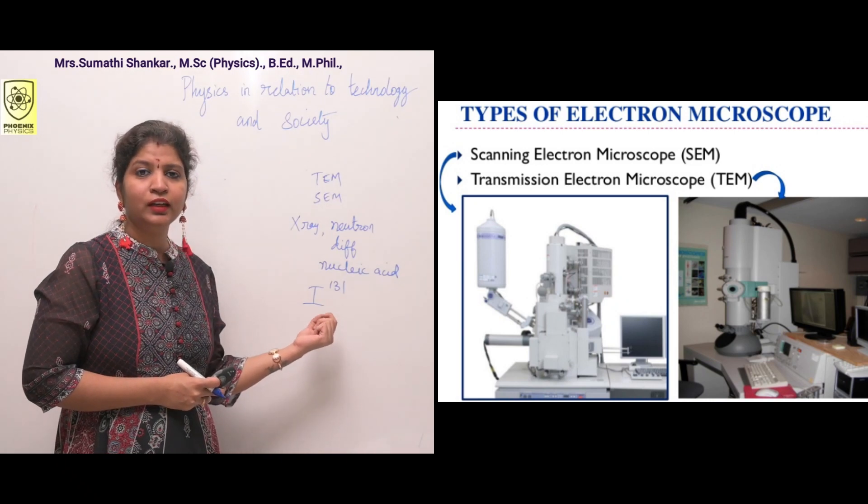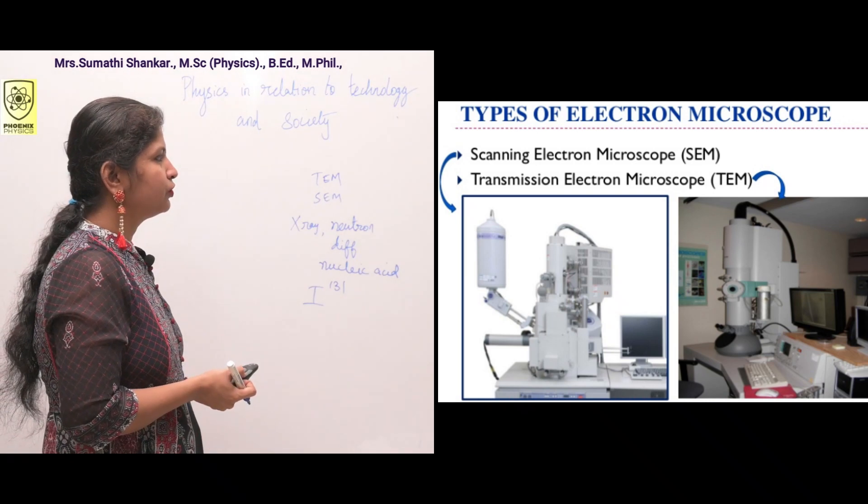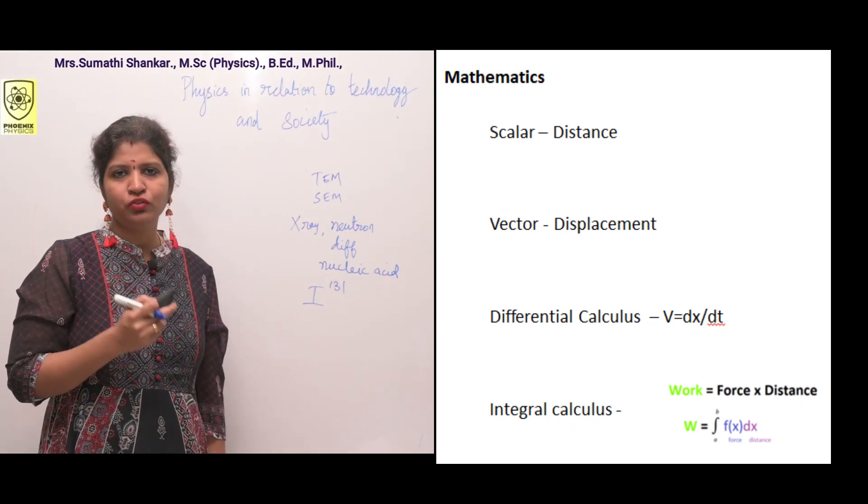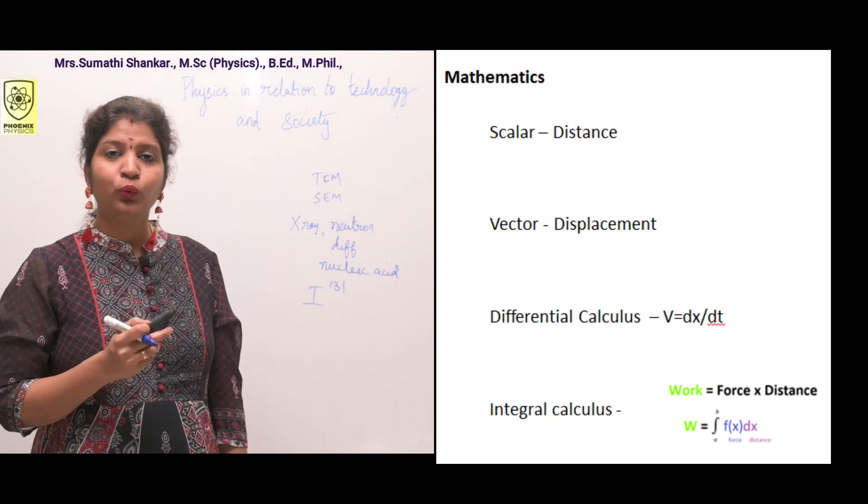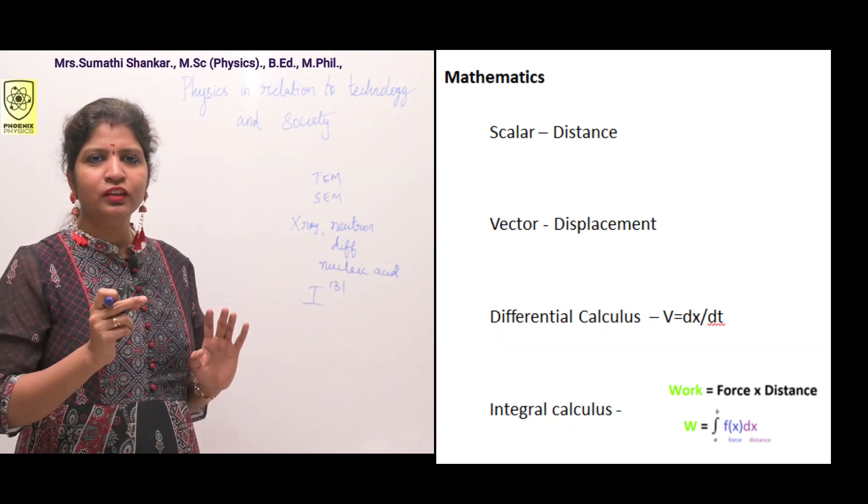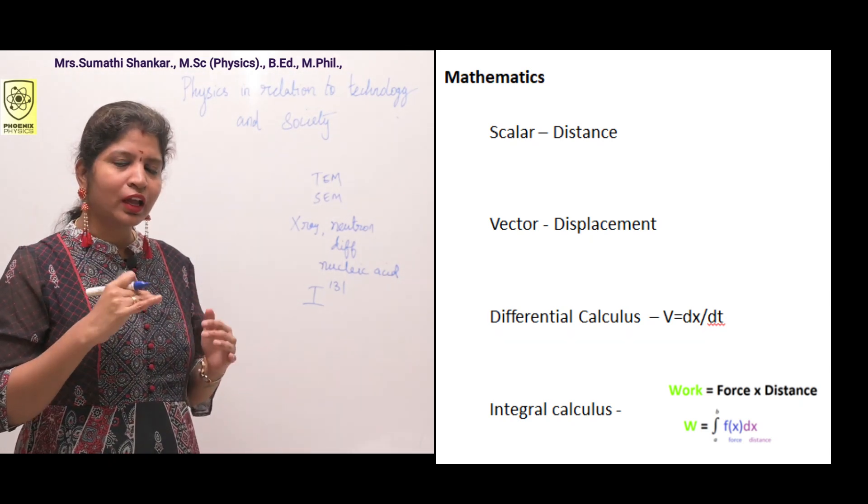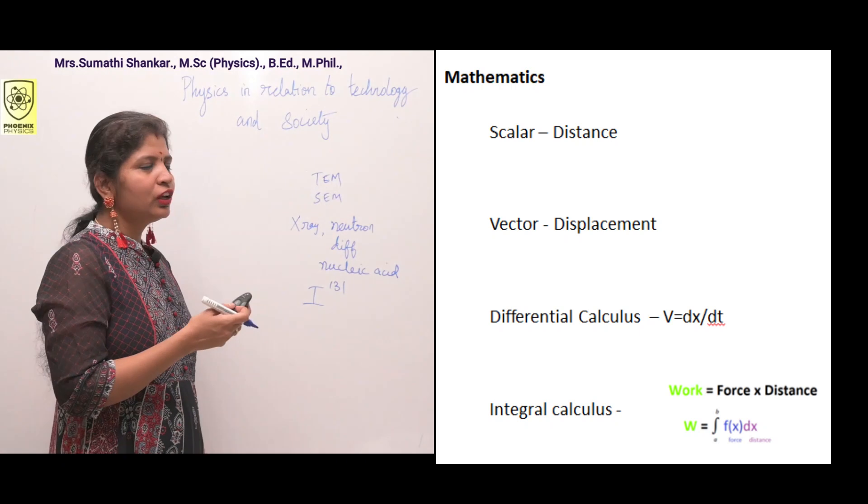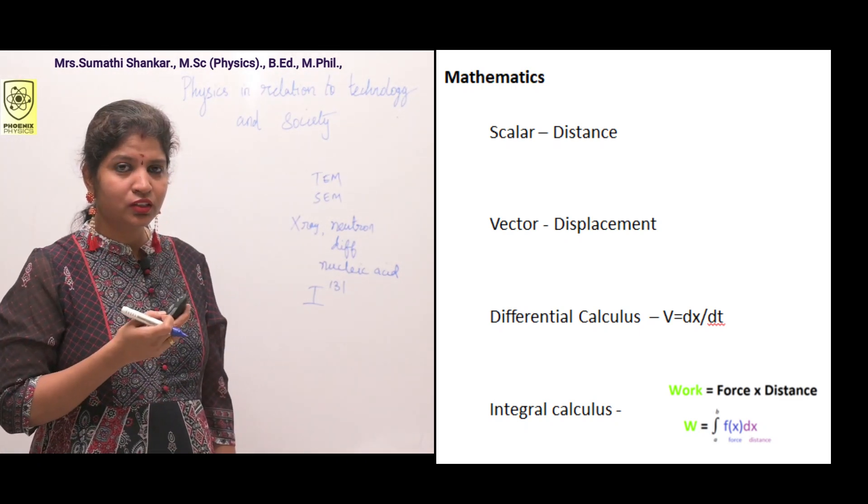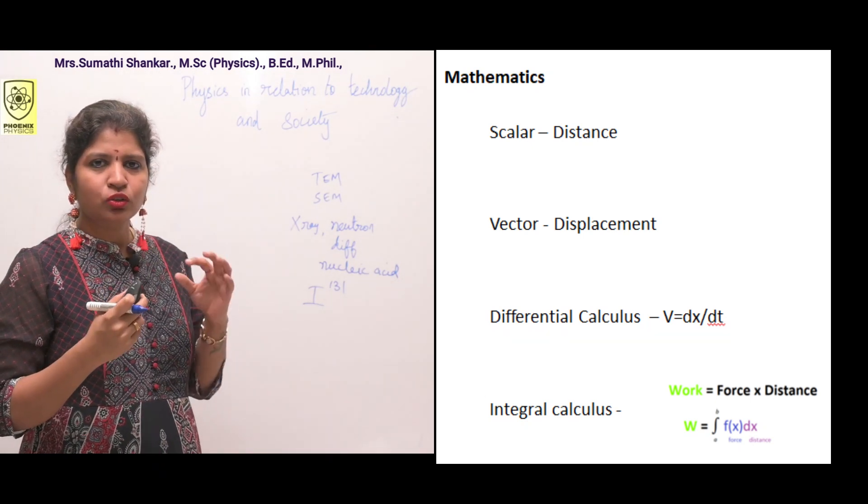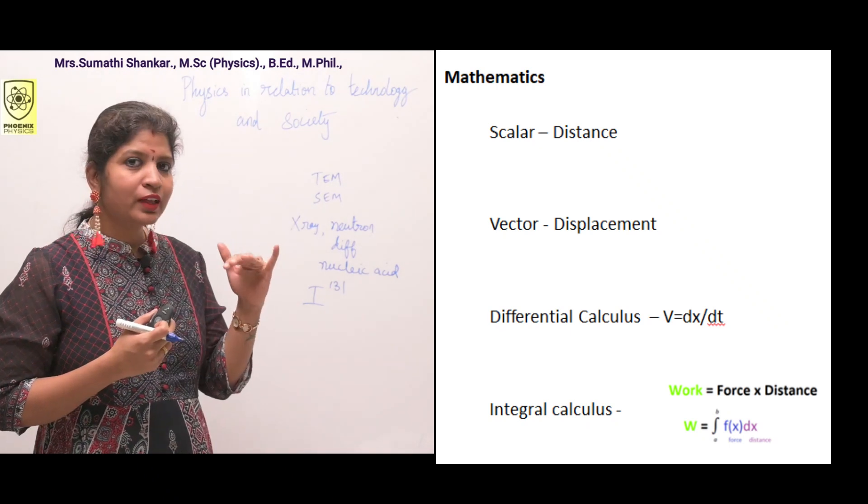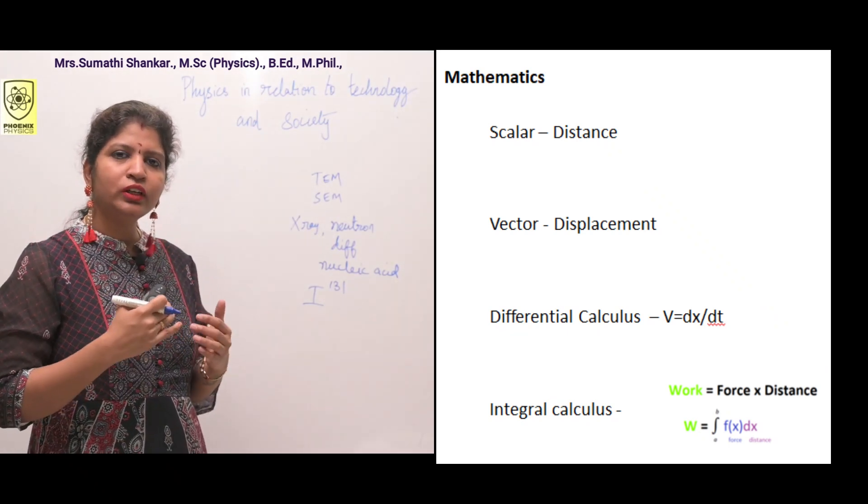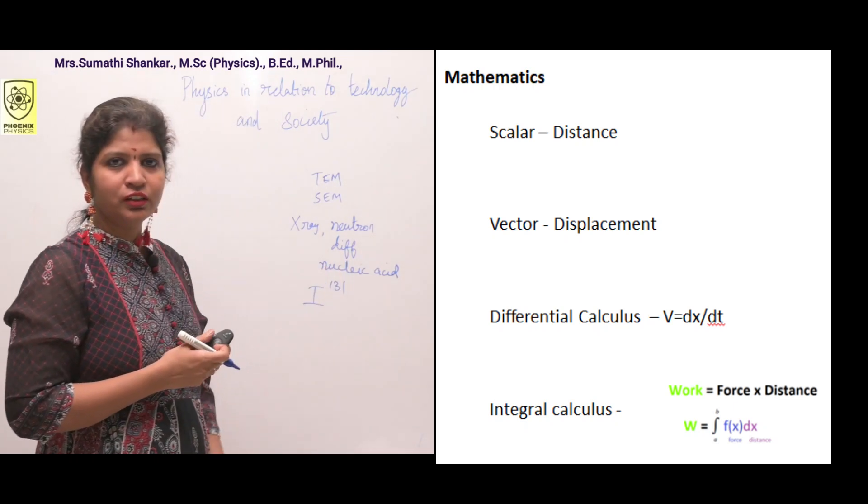Physics in relation to mathematics. I just said physics is the king of all sciences. Similarly, math is the twin of science. Without physics we can't do anything in math, and without math applications we can't do anything in physics. In math we use scalars and vectors. Scalars have magnitude - magnitude means numbers. Example: distance. Vectors have magnitude and direction. Example: displacement.